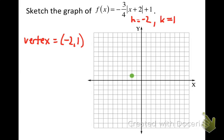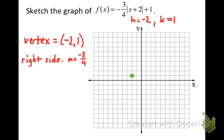After placing the vertex, we use the value of A to determine the slopes of the sides. A corresponds to the slope of the right-hand side, so the slope of the right side is negative 3 fourths. From the vertex, I go down 3 units and right 4 units to plot a point, then do it again. There's the right-hand side of the graph.